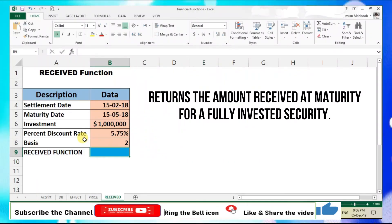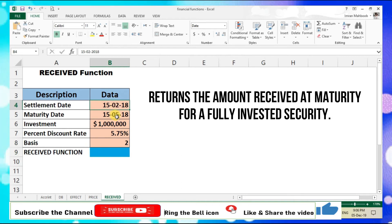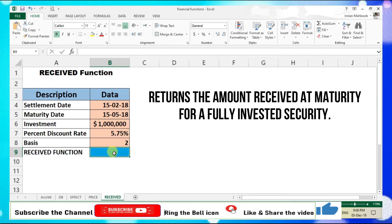Here we have a scenario. The settlement date is 15th February, the maturity date is 15th May 2008, the investment amount is 1 million dollars, and the discount rate is 5.75 percent. Basis is considered as 2, it means the formula will count actual days in a month and 360 days for a year.